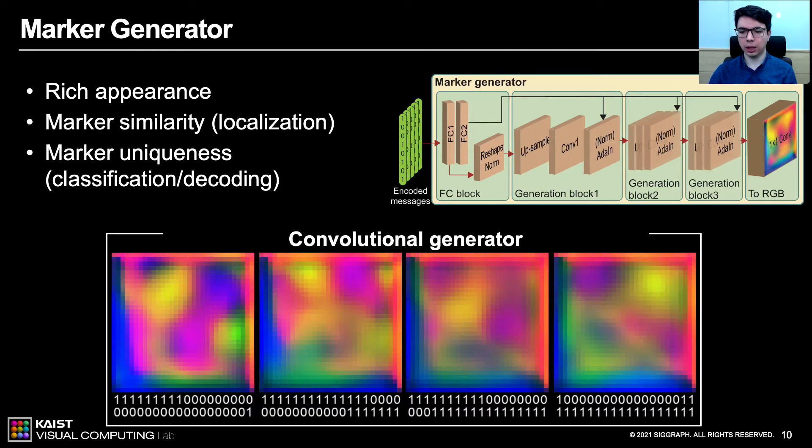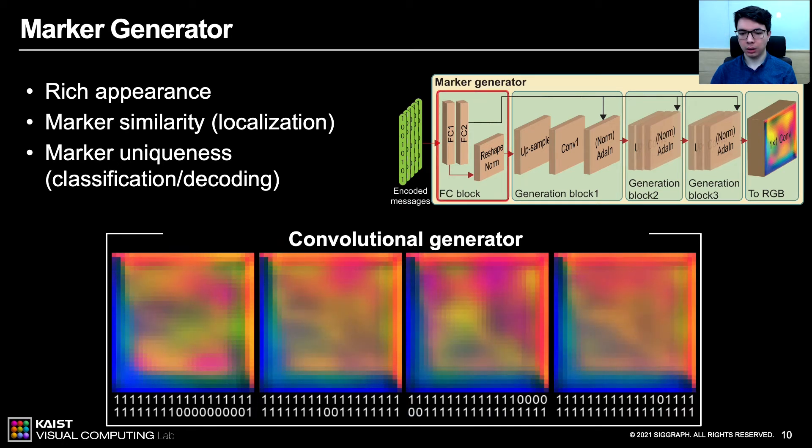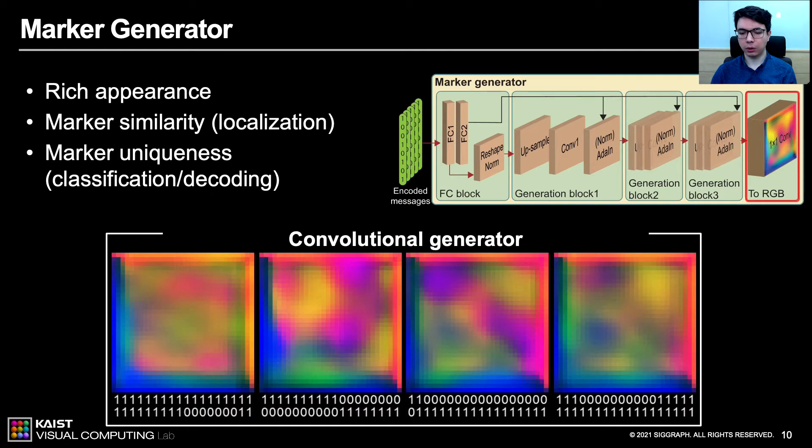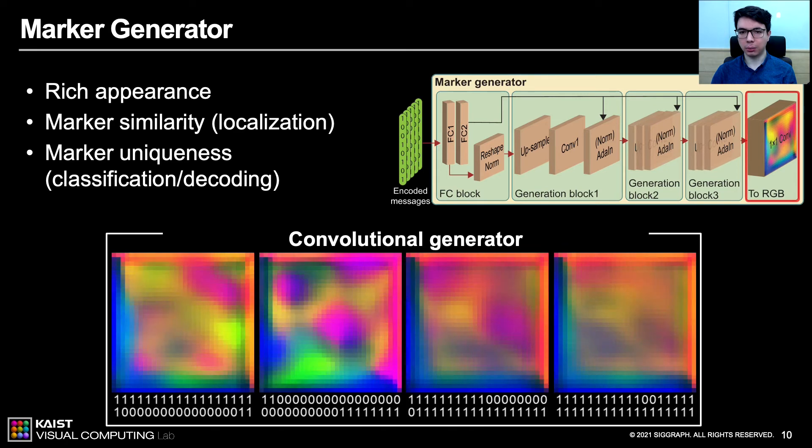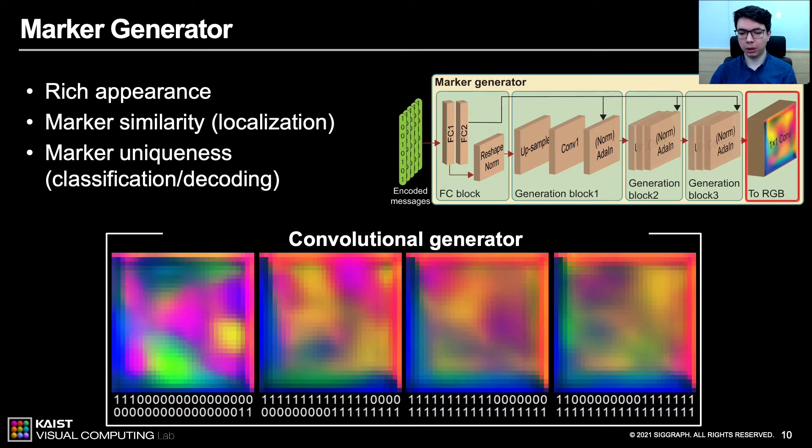Our system is based on an encoder-decoder-like architecture. Each fixed-length binary input generates a unique and variety of markers. This also increases number of markers exponentially. We use fully-connected block in the beginning to transform the input binary message. Then, we apply convolutional generation blocks, inspired by the work StyleGAN. Finally, we convert markers into RGB from higher feature representation. Below, you can see the markers generated by changing the encoded binary message. Qualitatively, we observe marker similarity by common features, such as blue pattern on the left corner, while keeping a rich variety within a marker appearance.